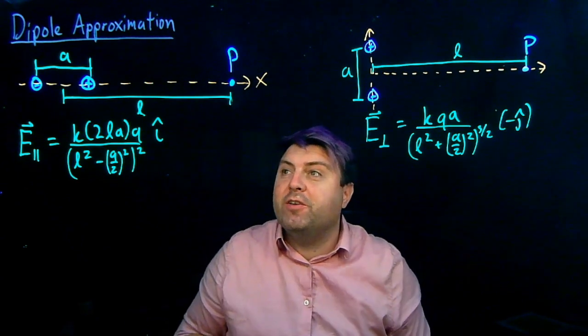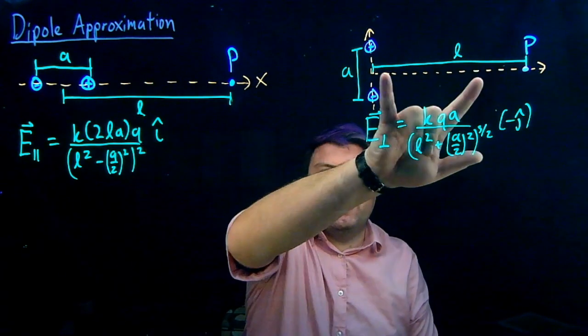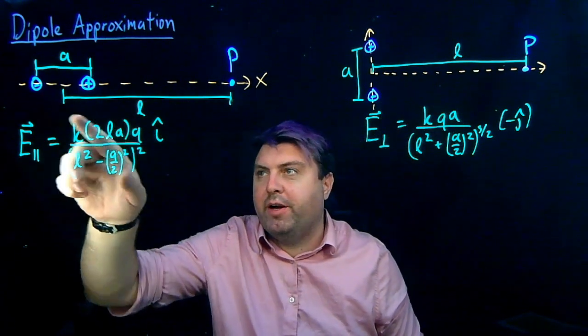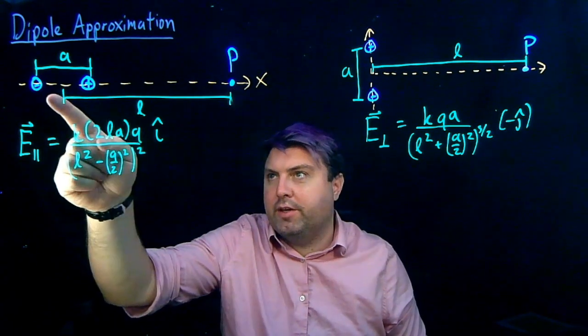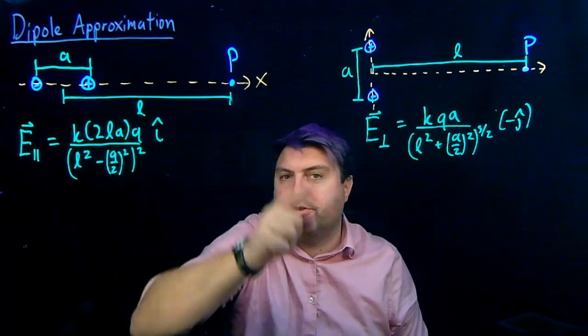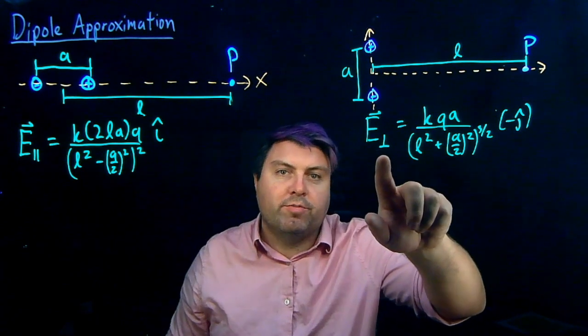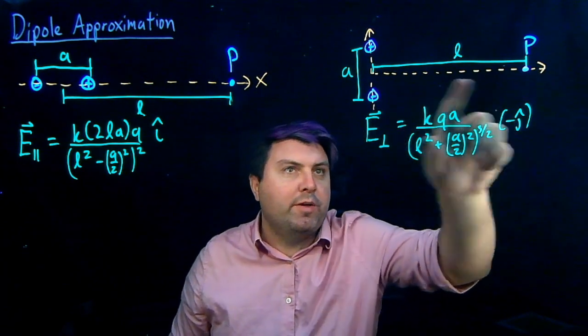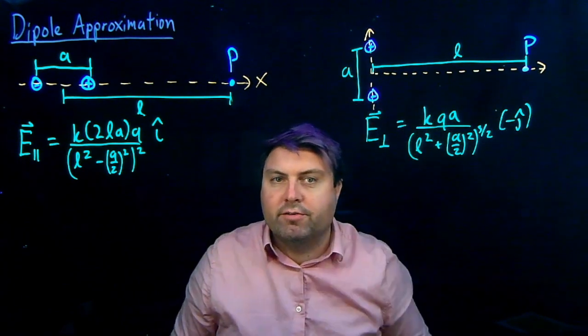Welcome! So, in previous videos we got this result and this result. This result we are going to call parallel because our point P is parallel in direction to A. We're going to call this result perpendicular because this point P is perpendicular to the result A.